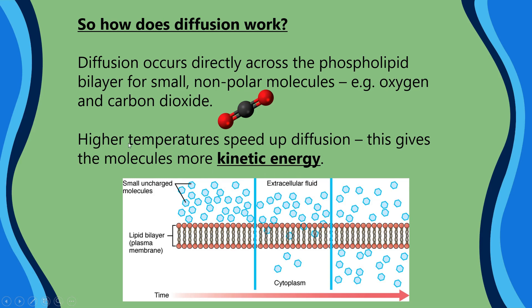Higher temperatures speed up diffusion — this gives the molecules more kinetic energy, meaning movement energy. Small nonpolar molecules can diffuse directly across the membrane. Carbon dioxide is an example of a molecule that can move directly across the phospholipids, and so is oxygen.